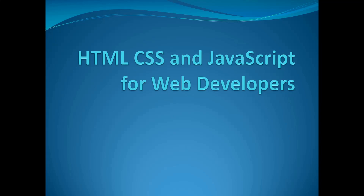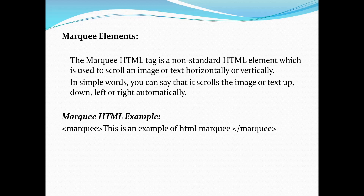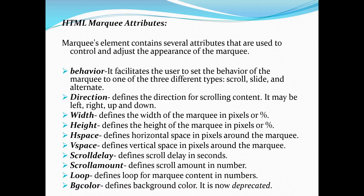Hello everyone, welcome to today's session. Today we are going to learn about the marquee element. The marquee element is used to scroll your text or image horizontally or vertically. If you want to scroll your image or text up, down, left, or right automatically when the website opens, then you use the marquee element. You open the marquee tag, put some content inside it, and then close the marquee tag.